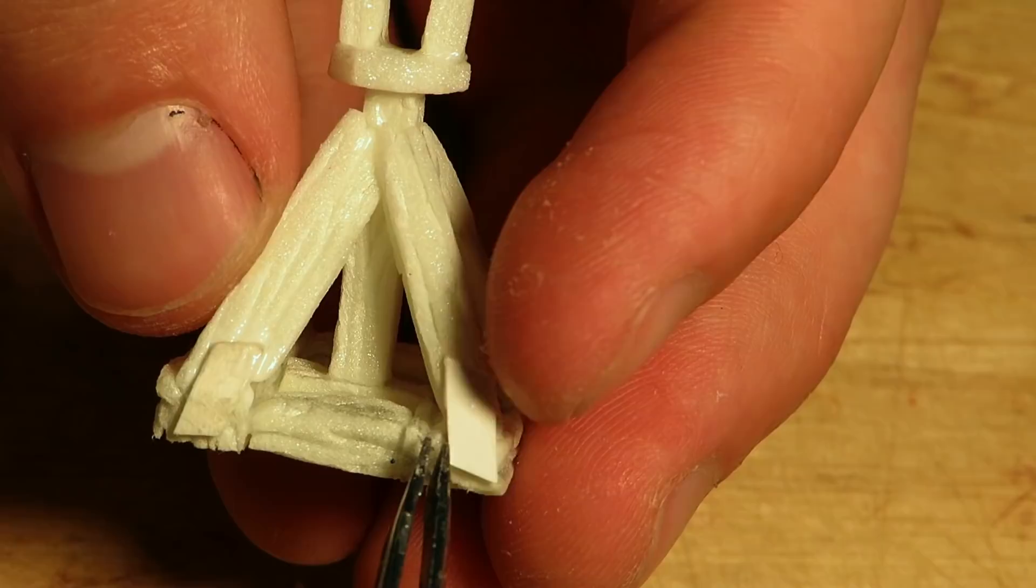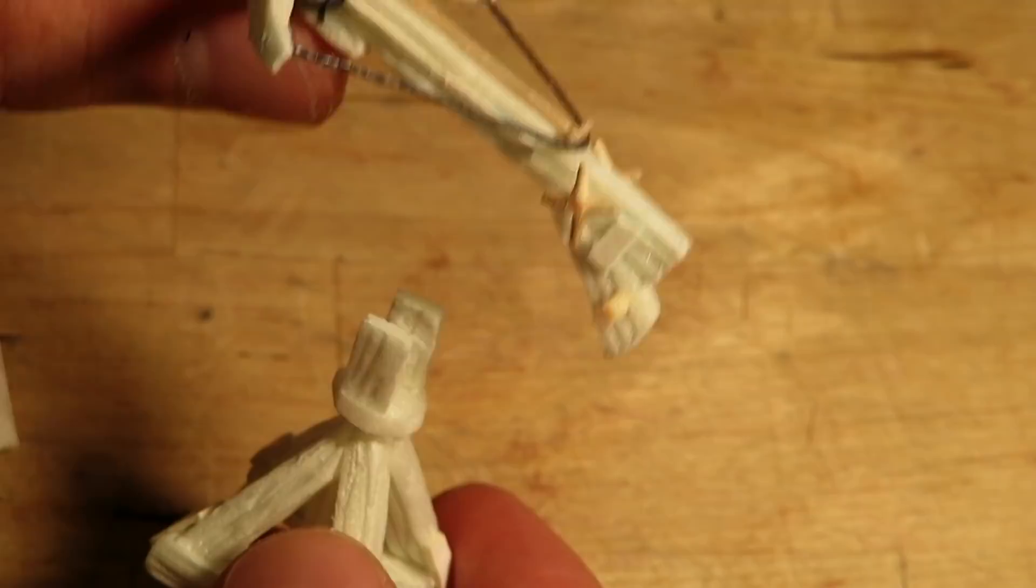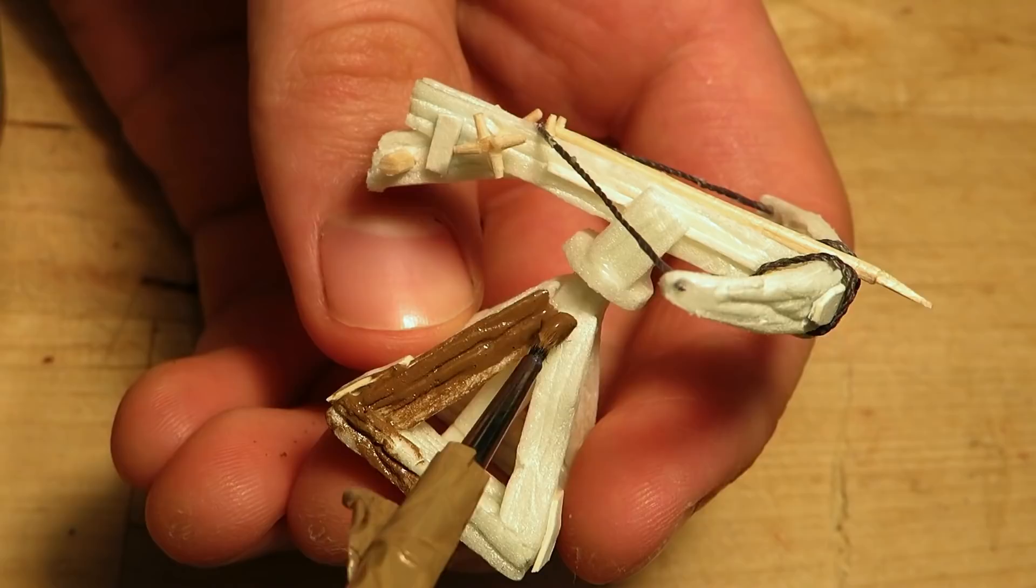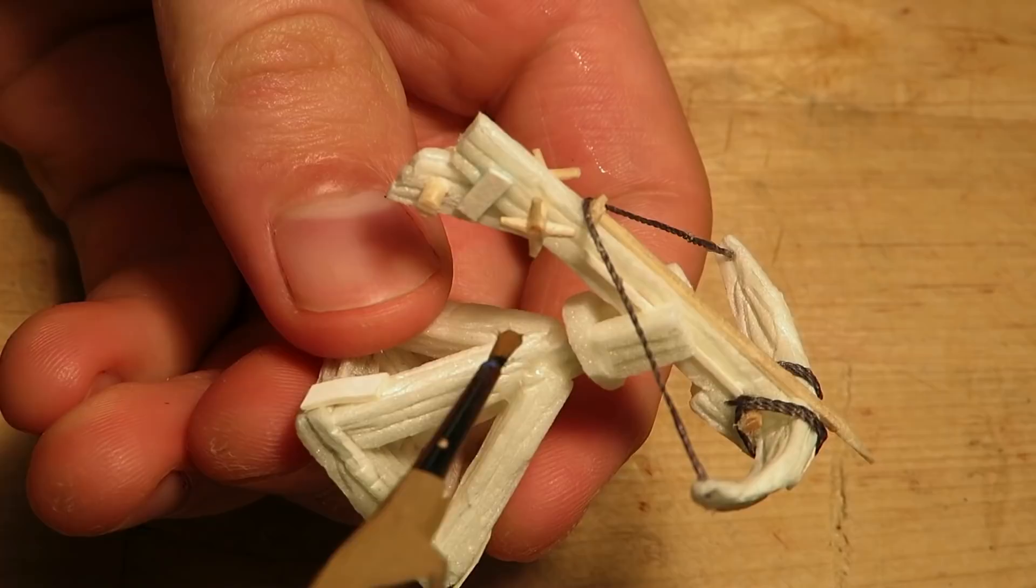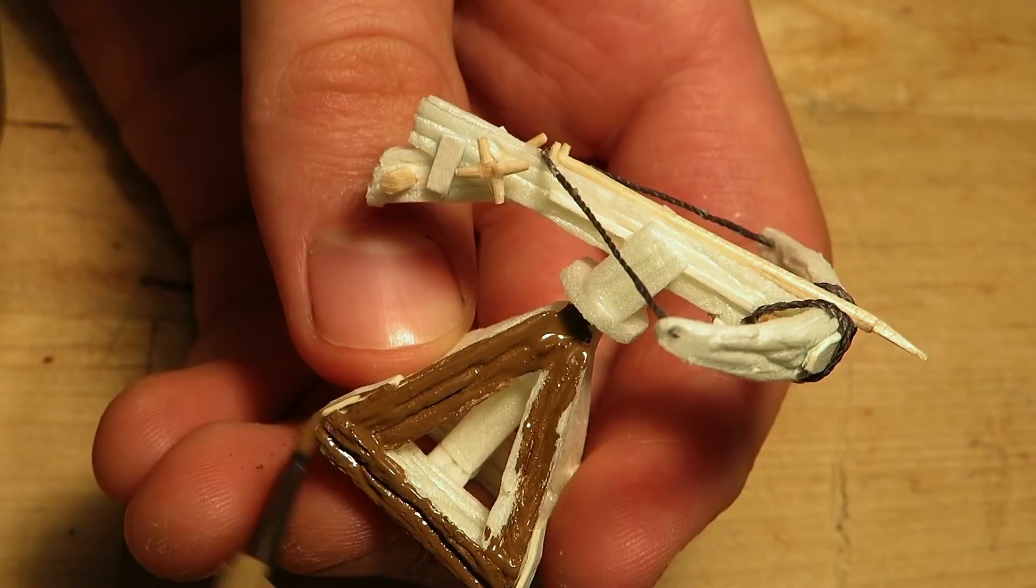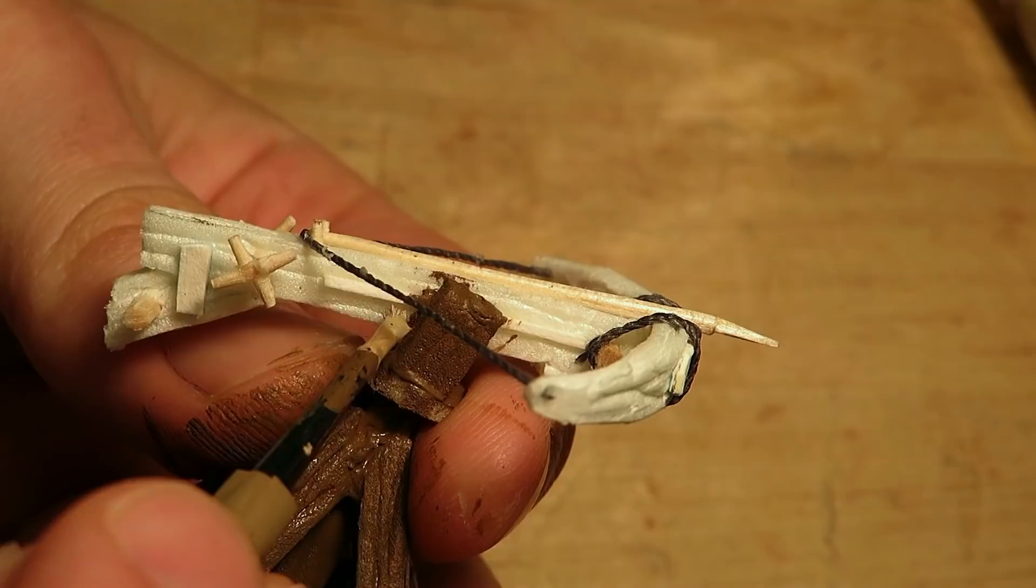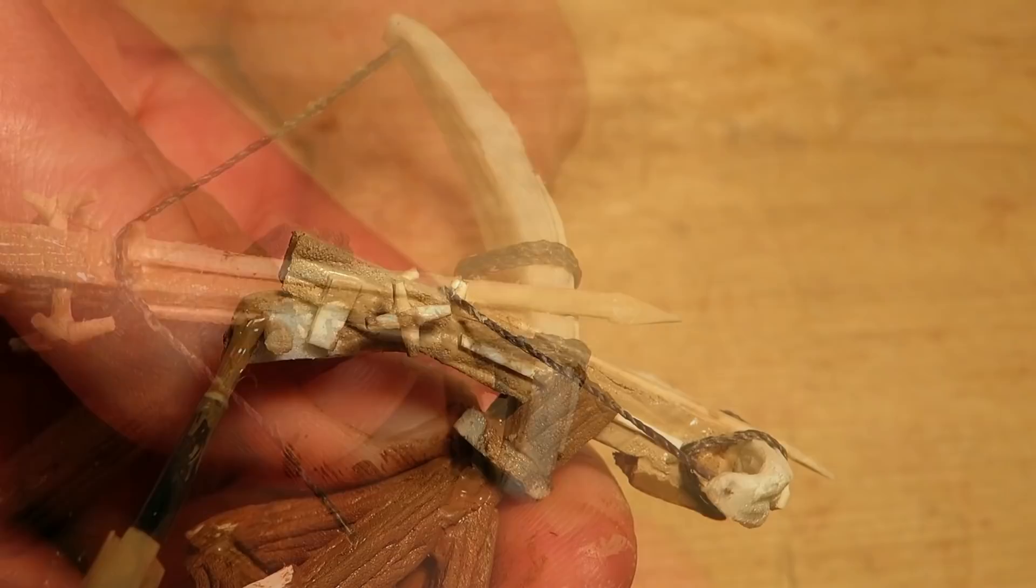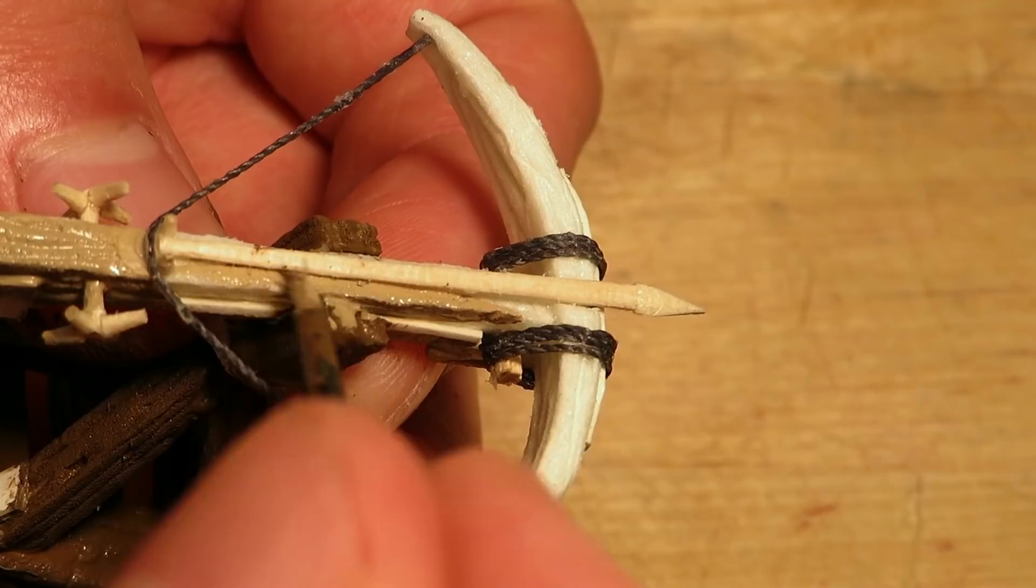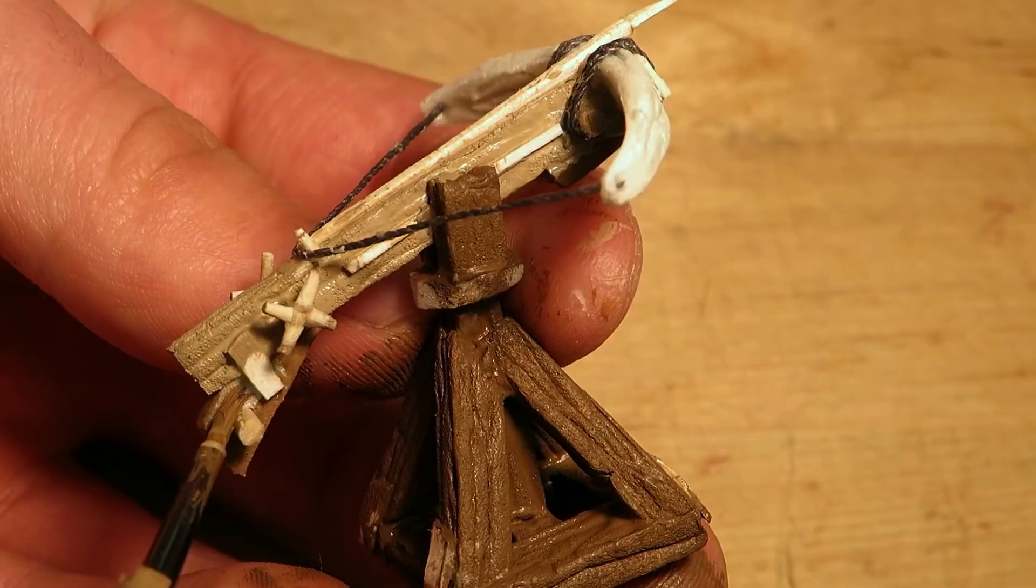For this ballista I used Army Painter miniature paints. I started by painting the frame with leather brown. And for the stock of the ballista I mixed light brown out of leather brown and drake tooth white. I went back to the leather brown and painted this piece of the stock. And then the bow.